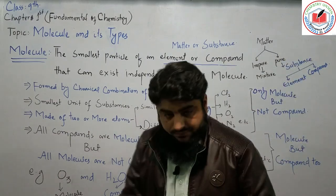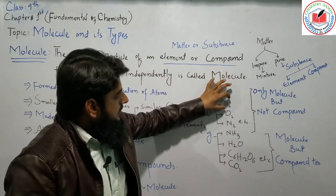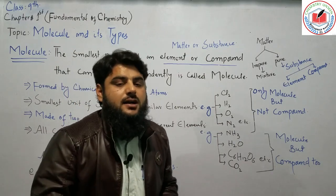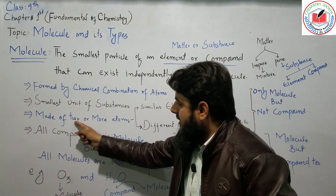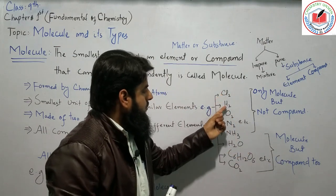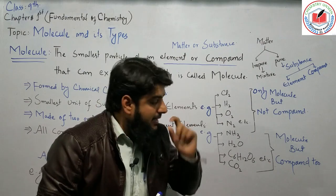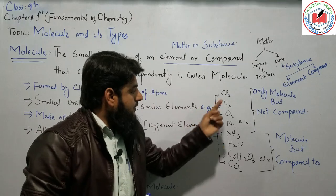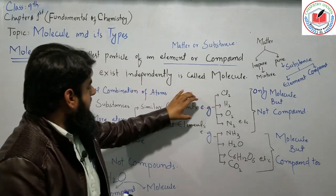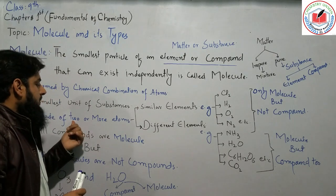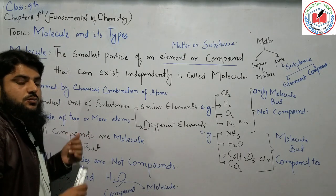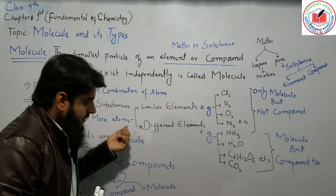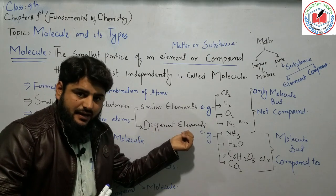Elements such as chlorine, hydrogen, oxygen, and nitrogen can form molecules. When two or more atoms of the same element combine, they form an elemental molecule. When atoms of different elements combine, they form a compound molecule.